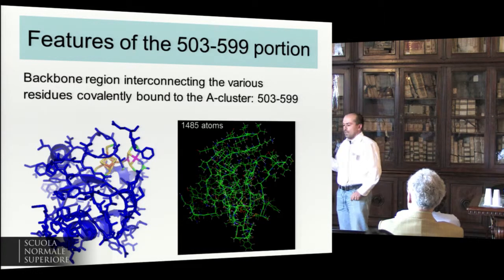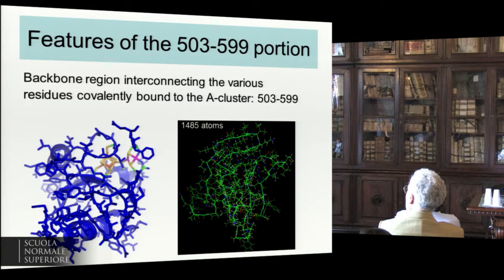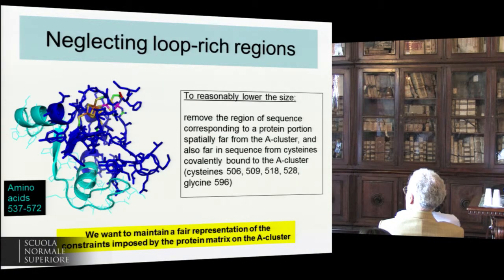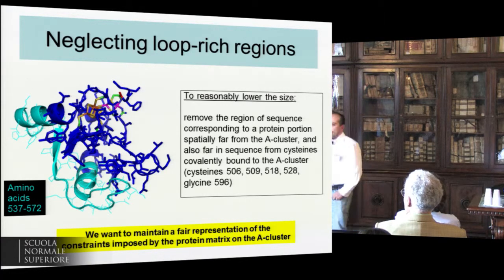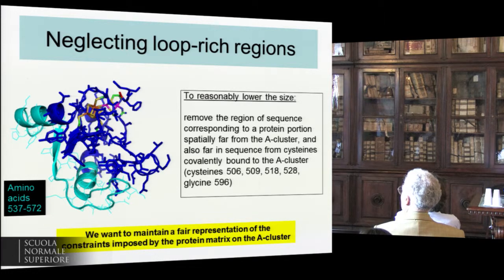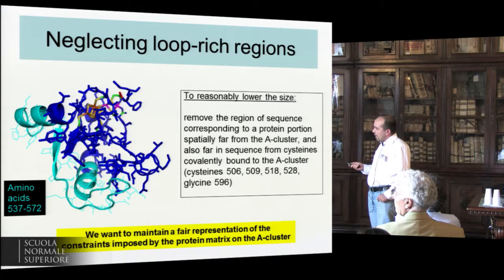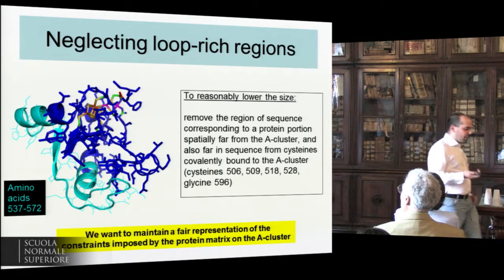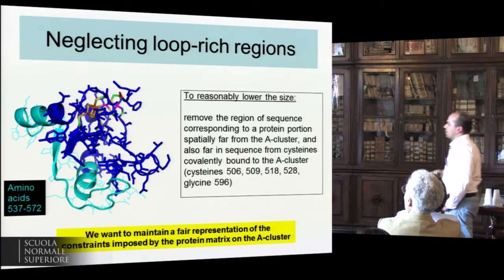This region is approximately 1,500 atoms big, which is still a little bit large. So we have to look more carefully. Using our biochemical skills, we can cut a little bit more while keeping the constraints on the A-cluster in a fair way. There is quite a large area, fairly far from the A-cluster, which is very rich in loops and therefore not particularly rigid — so we might cut this away.